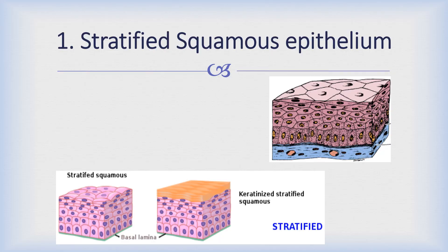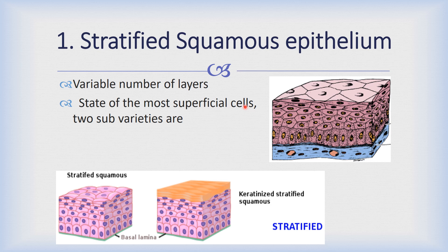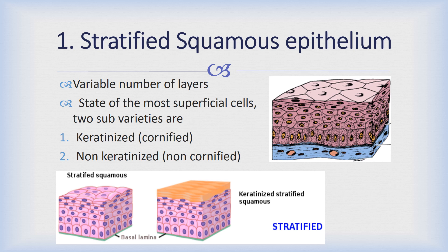We will discuss stratified squamous epithelium. As the name indicates, stratified means it has got multiple layers, and squamous means that the topmost layer is squamous in shape. Seeing the state of the most superficial cells, there are two sub-varieties of stratified squamous epithelium. First is keratinized, which is also known as cornified, and the second one is non-keratinized.